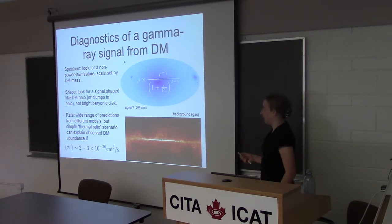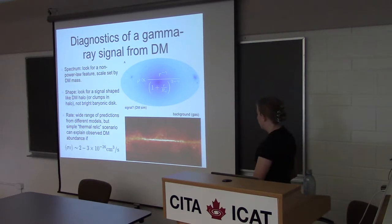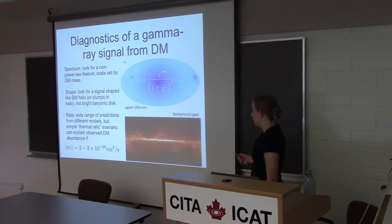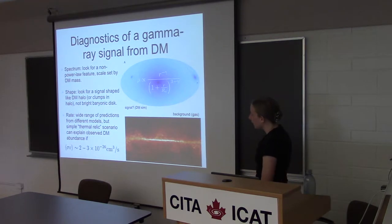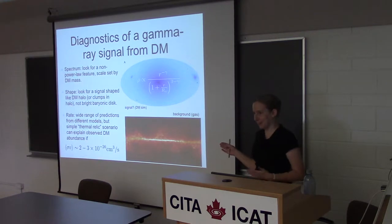At small radii, we're essentially just modeling the dark matter density as a power law with an unknown power. In the classic models of dark matter density based on simulations, this gamma power is about one. But once we add variance to it, we don't actually know even whether this number goes up or down reliably.